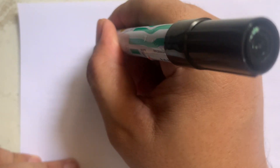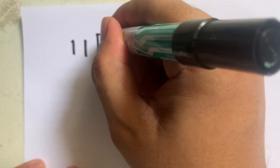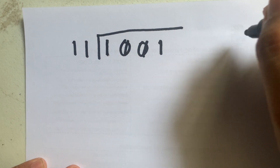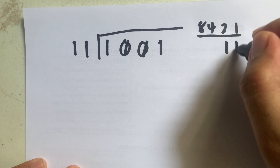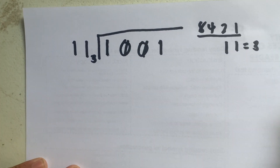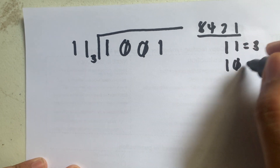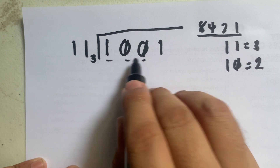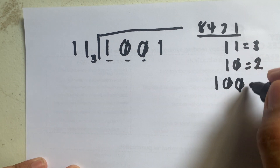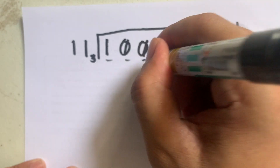Let's have another example: 1001 divided by 11. We convert our divisor 11 to decimal using positional values 1, 2, 4, 8 — so 11 is 3. Taking the first two digits of our dividend, 10 is 2, and we cannot divide 2 by 3. So we take the first three digits: 100, which in decimal is 4. Since 4 divided by 3 gives 1, we place 1 in the quotient above the last digit considered.